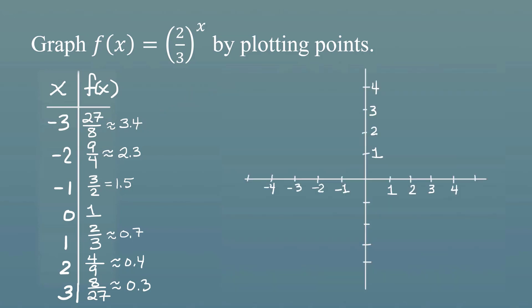All right, so let's start plotting points. Negative 3, 3.4 would be about here between 3 and 4 there. Negative 2, 2.3 would be maybe about here. Negative 1, 1.5 looks like it would be right about there. 0, 1 is going to be here. 1, 0.7 would be here. 2 and 0.4 would be about here. And 3 and then 0.3 would be about here.